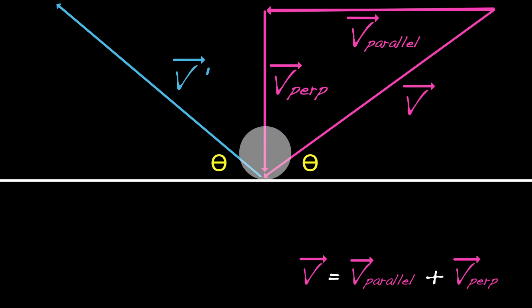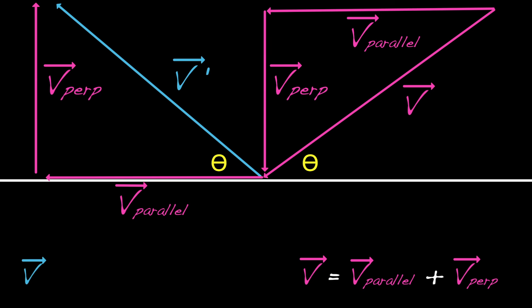The only force during the collision is perpendicular to the floor, because the floor pushes up on the ball. So the parallel component won't change, and the perpendicular component as before will be reversed, meaning that v prime equals v parallel minus v perpendicular. Adding elasticity into the mix, we get this equation.